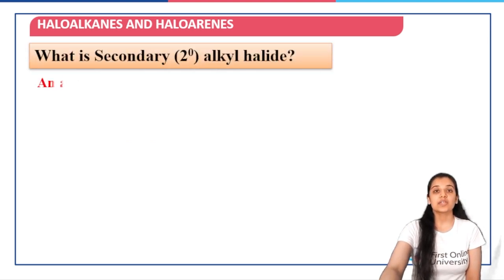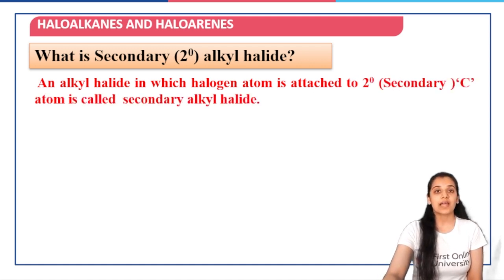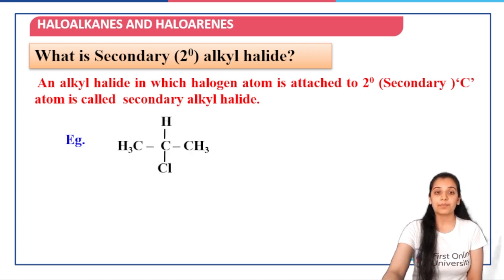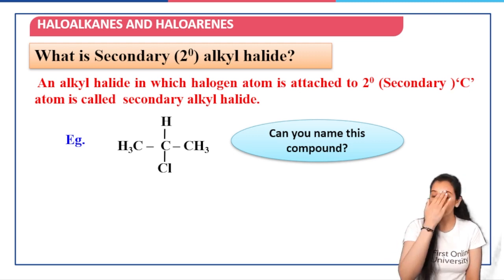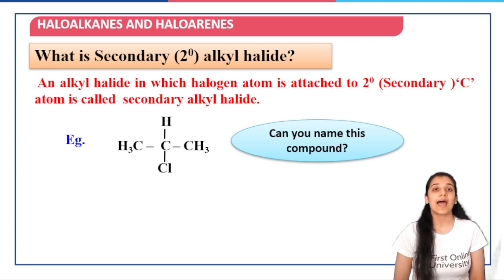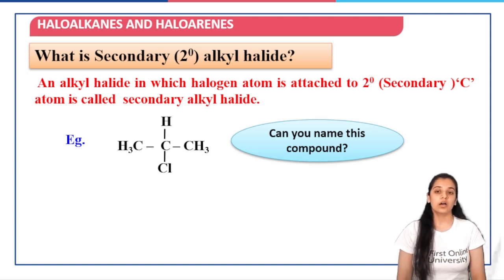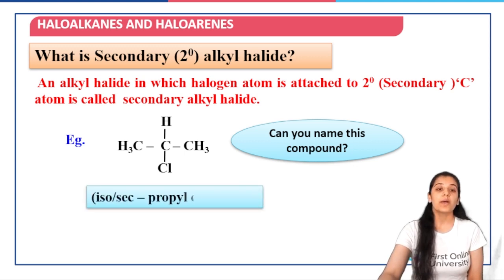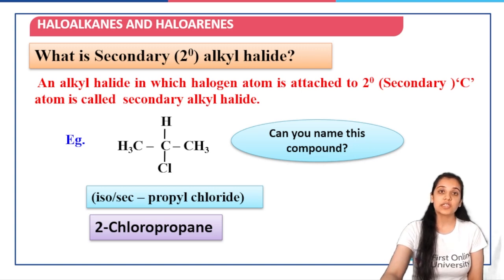Secondary alkyl halide is the one in which the halogen is attached to a secondary carbon atom, meaning that carbon atom is further attached to two other carbon atoms. For example, the compound 2-chloropropane — also called isopropyl chloride or secondary propyl chloride — has three carbon atoms, and the carbon atom to which the chlorine is attached is further attached to two other carbon atoms. Therefore, we call it a secondary alkyl halide.